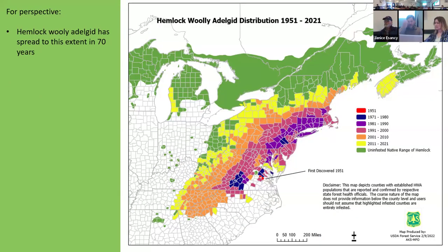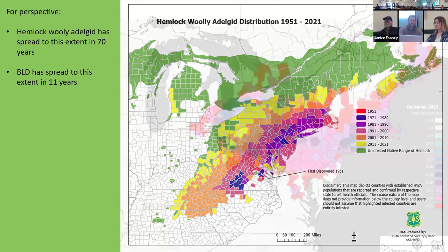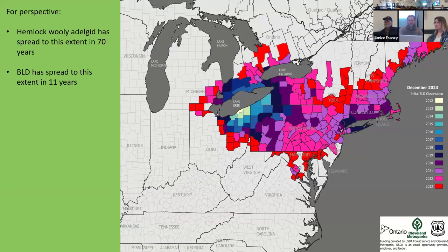Here's some perspective: hemlock woolly adelgid spread from northern Georgia to our neck of the woods over 70 years. Beech leaf disease has pretty much mirrored that in just 11 years. It doesn't range as far south given the native range of beech, and there seems to be a northern spread to beech leaf disease. I'm not exactly sure why — lots of theories and hypotheses, but we don't have enough years of research to say for sure.